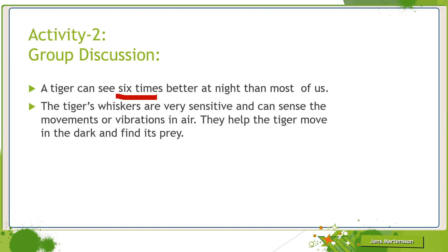The next point for discussion is, the tiger's whiskers are very sensitive and can sense the movements or vibrations in air. They help the tiger move in the dark and find its prey. The whiskers are located on the tiger's muzzle, which we call the snout, and are used when attacking prey and navigating in the dark. The tiger uses these whiskers to sense where they should inflict a bite. When navigating through darkness, the tiger's pupils dilate to let more light enter the eye to increase their vision.